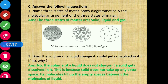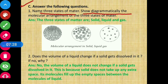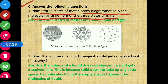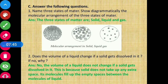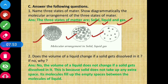Section C: Answer the following questions. Question number 1 - name the three states of matter and show diagrammatically the molecular arrangement of all three. The three states of matter are solid, liquid, and gas. The diagram shows molecular arrangement: for solid the molecules are closely packed, for liquid they are loosely packed, and for gas they are far apart.